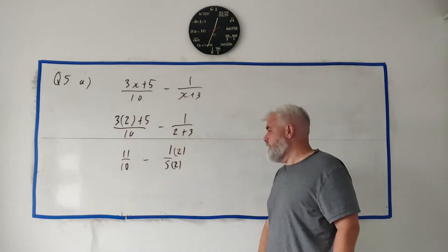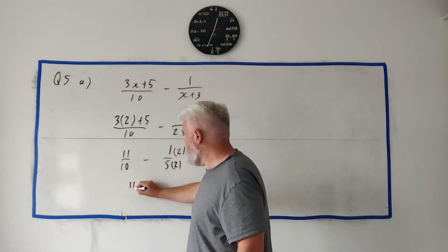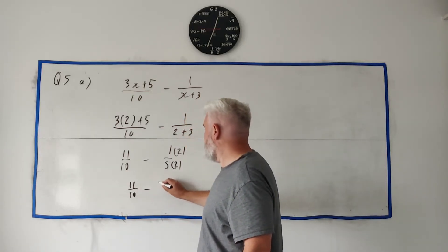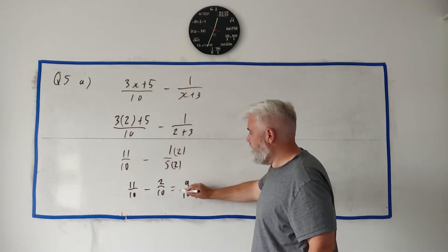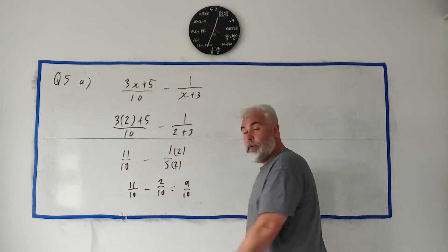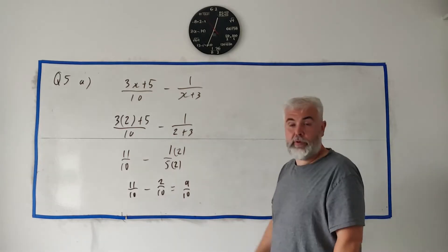So let's change this guy to 10, multiply by 2, and we better be fair and even multiply the top by 2. That becomes 11 over 10 minus 2 over 10, which is equal to 9 over 10. 11 tenths take away 2 of those tenths, we're left with 9 tenths.